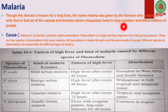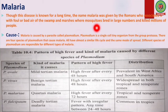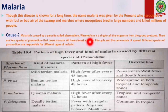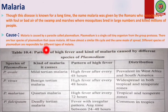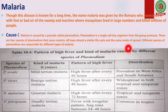First of all, talking about malaria. Though this disease is known for a long time, the name malaria was given by the Romans, who associated it with foul, bad air of the swamps and marshes where mosquitoes bred in large numbers and killed millions of people. The cause behind malaria is Plasmodium, which is a single-celled tiny organism from the group Protozoa. There are four species of Plasmodium that cause malaria, all having almost a similar life cycle and the same mode of spread.